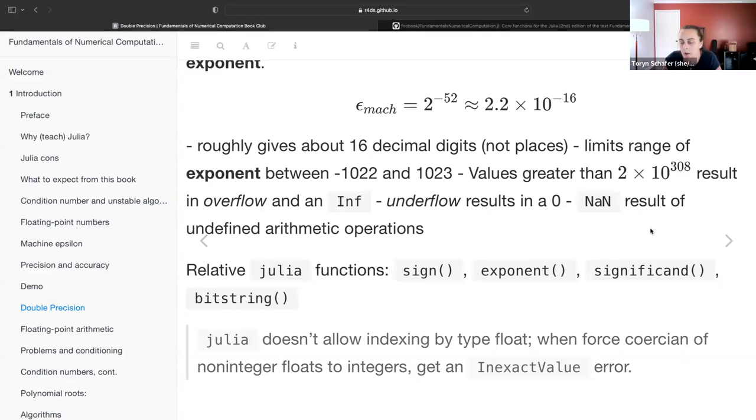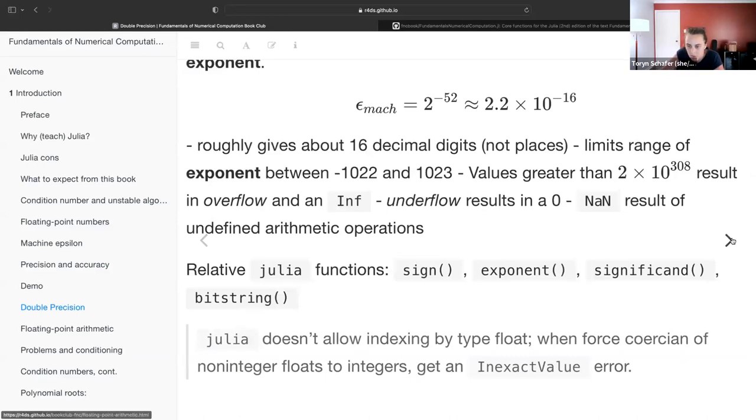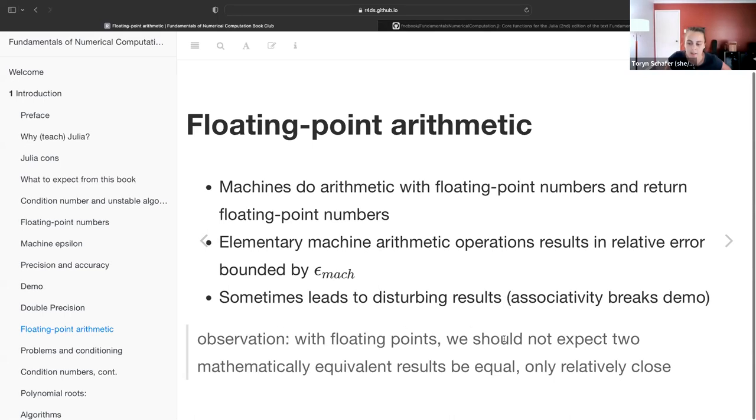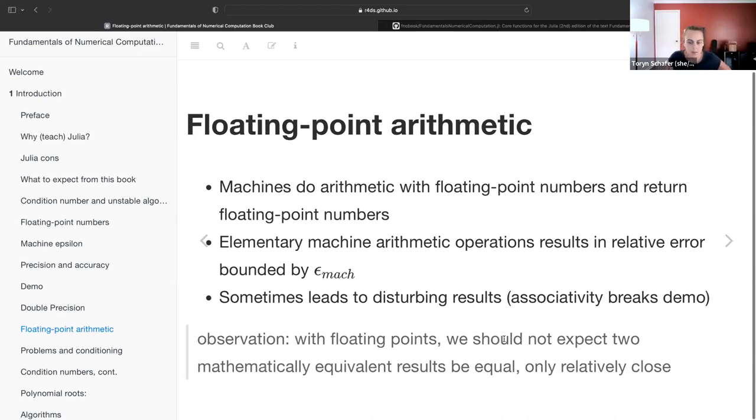Floating point arithmetic: machines do arithmetic with floating point numbers and they return floating point numbers. The elementary machine arithmetic operations, like plus, minus, divide, multiply, result in relative error bounded by machine epsilon. Sometimes though, this leads to disturbing results. There's an example in the book where they show that associativity of addition breaks down. We should observe that with floating points, we should not expect two mathematically equivalent results to be equal, but only relatively close.